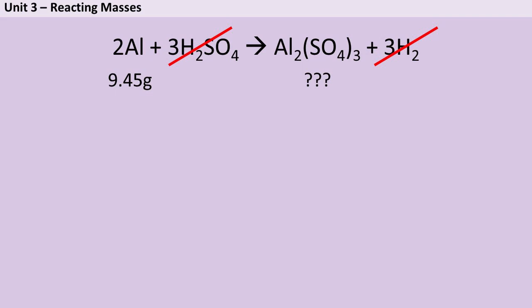Just like before, my first step is going to be adding the numbers from the question underneath my equation and crossing out anything I don't need to use. I could spend ages working out what the relative formula mass of sulfuric acid is, only to realize that I didn't even need it to answer this question. So make sure whatever mass they've given you, that goes under that chemical, and whatever chemical they've asked you to calculate the mass for, then you put your question marks. Everything else, you cross out. My first step was working out the relative masses of everything involved.